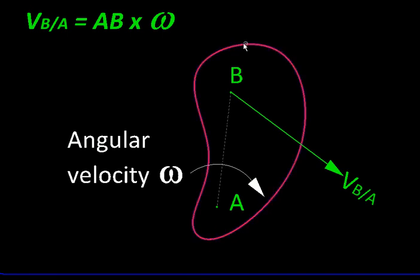Suppose we have this rigid body shown in red here and it is in motion right now. We are going to look at the velocity of B with respect to A. Suppose that velocity is directed as shown here.